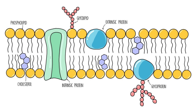Integral proteins can span the membrane, forming channels, receptors, or transporters. Alongside proteins, cholesterol molecules are interspersed within the phospholipid bilayer, providing stability and fine-tuning the fluidity of the membrane, thus playing a vital role in maintaining its integrity and functionality.